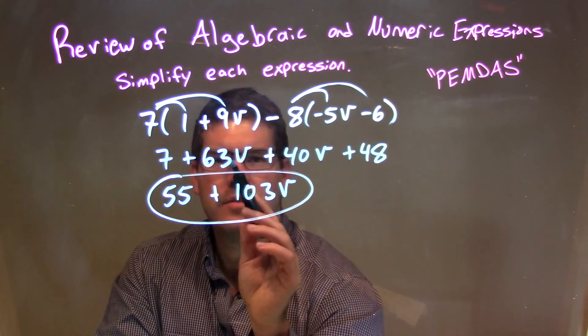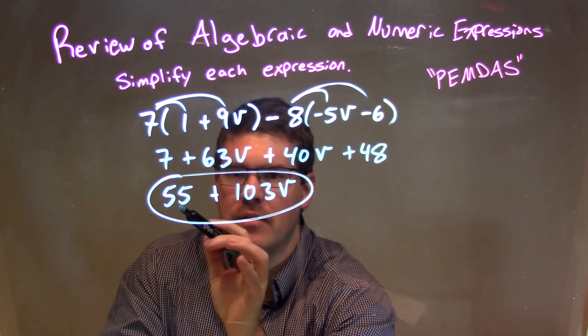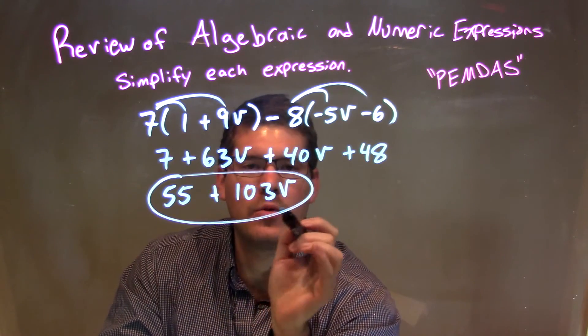Combined my like terms, 63b and 40b, giving me 103b. And 48 and 7 gave me 55. So, our final answer here, again, is just 55 plus 103b.